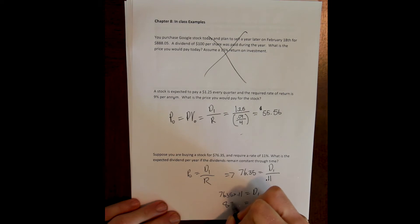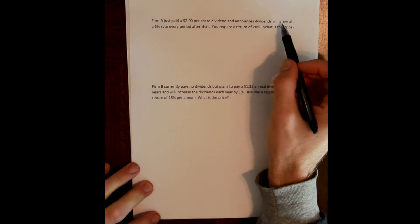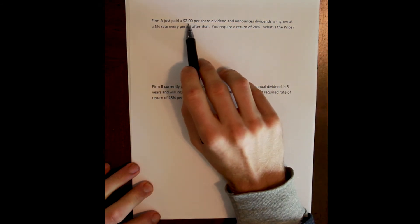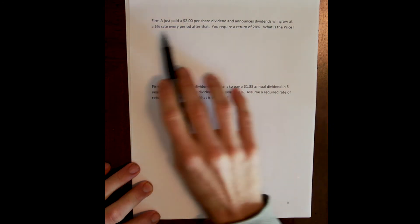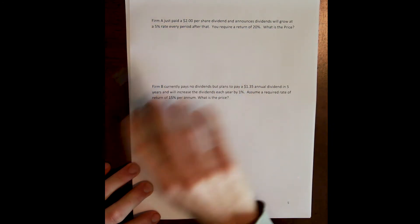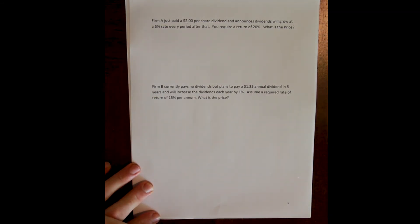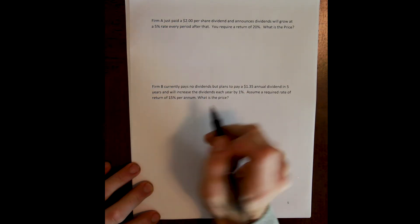The next example says that firm A just paid a $2 per share dividend and then announces dividends will grow at a 5% rate every period after that. If your required rate of return is 20%, what is the price you would be willing to pay? We now see a different sort of problem where the firm has just paid $2 per dividend, and they're telling us that following this payment the dividends are going to grow 5%. So we know now that this is a constantly growing regime, and that the model for a constantly growing regime is the model of a growing perpetuity.